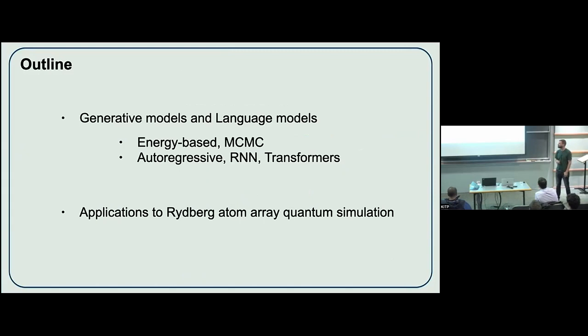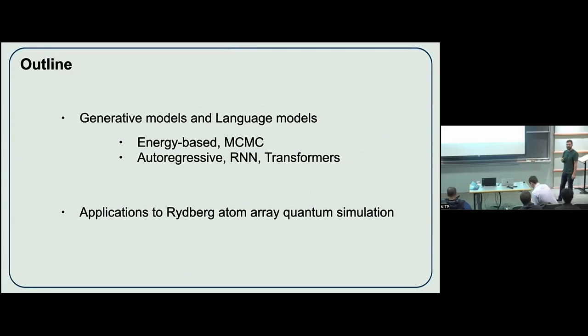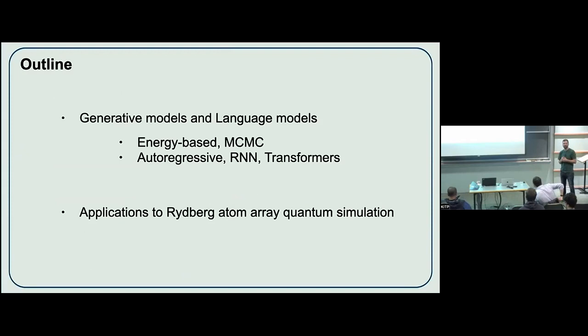Any questions before I go on to part two? Generally, to get the same accuracy in two dimensions — we did a 12 by 12 triangular lattice — you need way fewer parameters in a two-dimensional RNN than you do in an MPS. But that's 2D; I don't know about 1D. These transformer models have a trillion parameters, so they're huge models. We haven't really compared these things a lot to tensor network architectures, but we should.